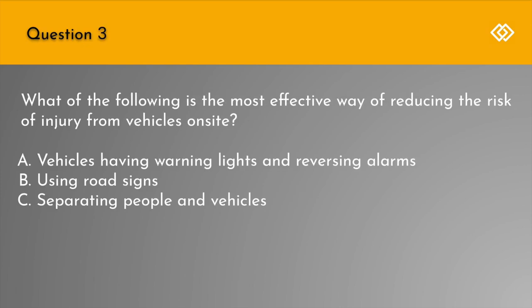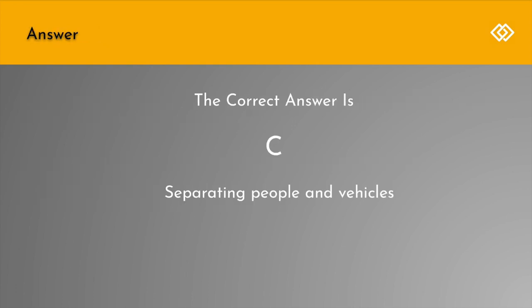Question 3. What is the most effective way of reducing the risk of injury from vehicles on site? A. Vehicles having warning lights and reversing alarms. B. Using road signs. Or C. Separating people and vehicles. The correct answer is C: Separating people and vehicles.